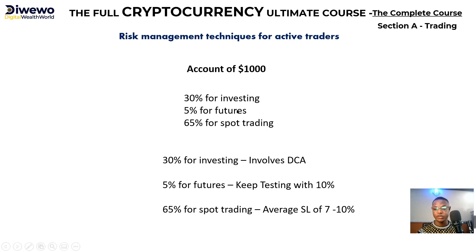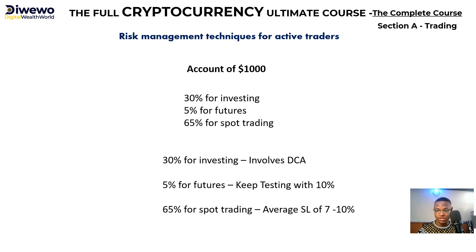I use only 5% for futures because it is very, very risky. The reason people lose money in futures is because they are trading with amounts they are not willing to lose. Once the trade goes against you by five percent, you already have high emotions and that will make you lose your funds. Trading with emotions will make you lose your fund, so trade futures with amounts you can easily let go.